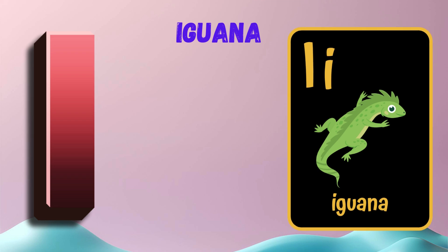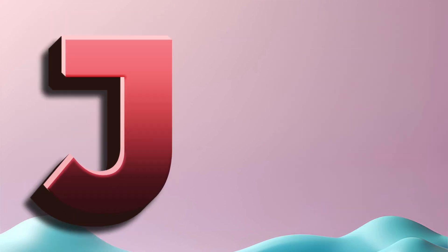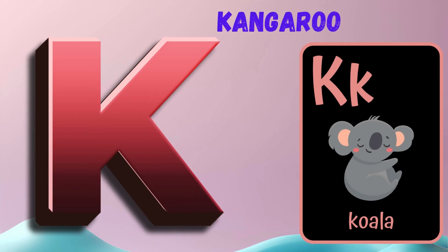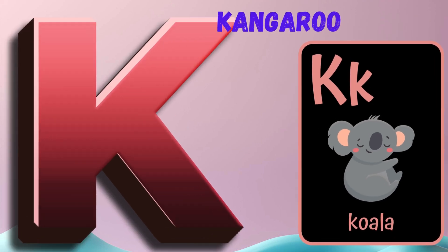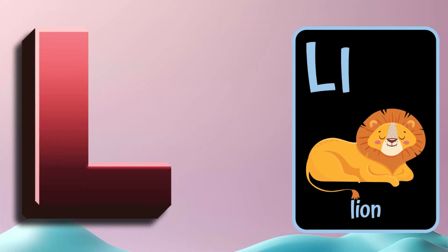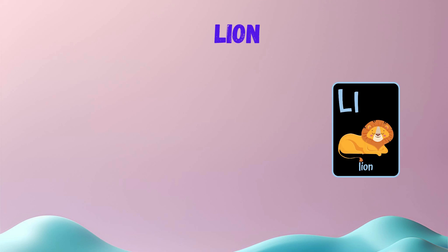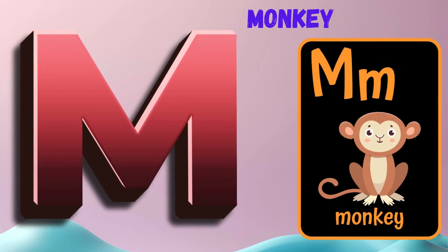I is for Iguana. I, I, I. Iguana. J is for Jaguar. J, J. Jaguar. K is for Kangaroo. K, K. Kangaroo. L is for Lion. L, L. Lion.